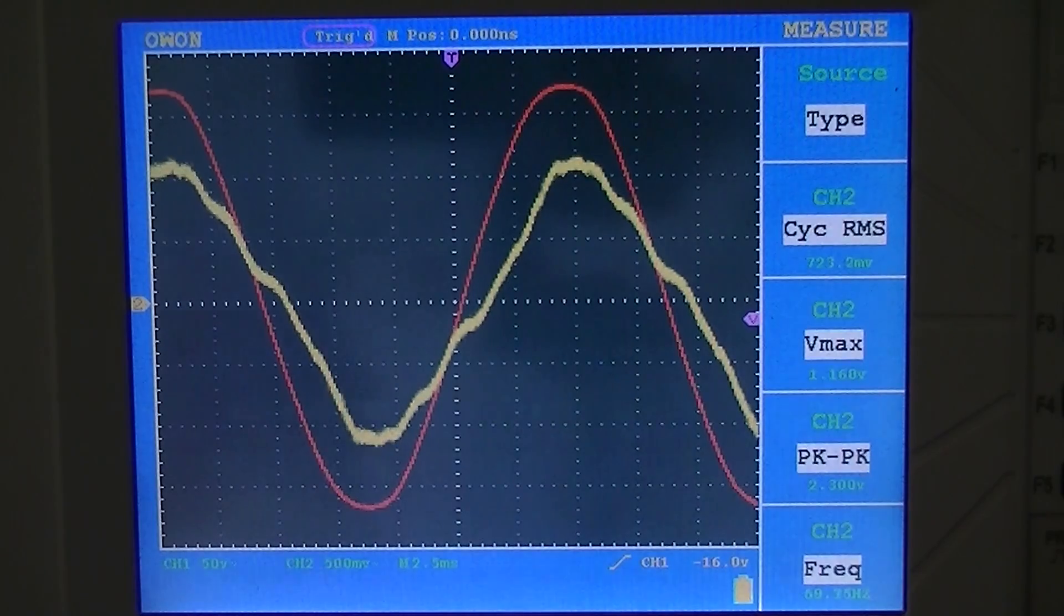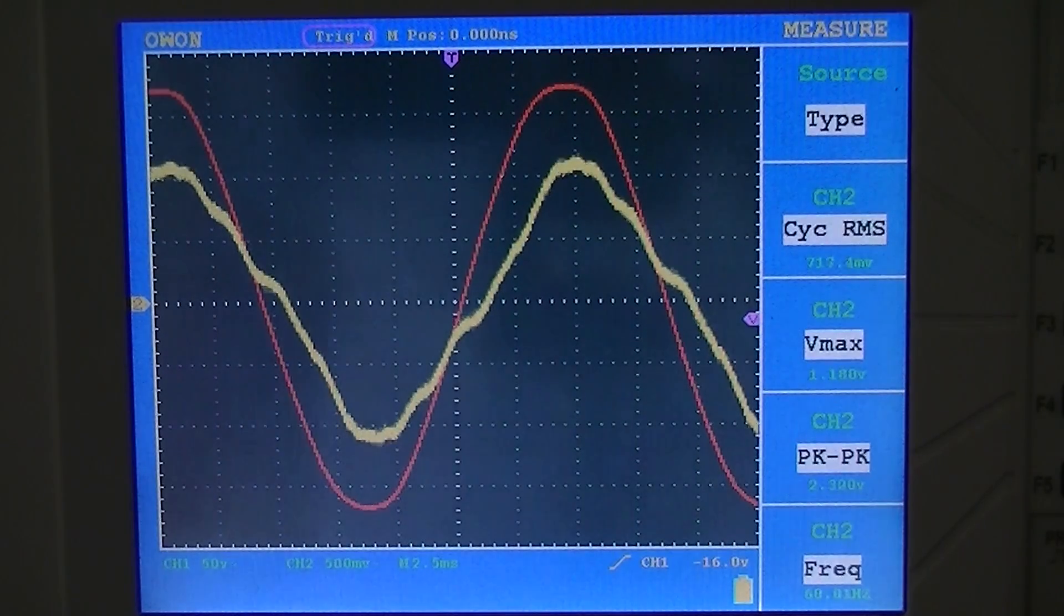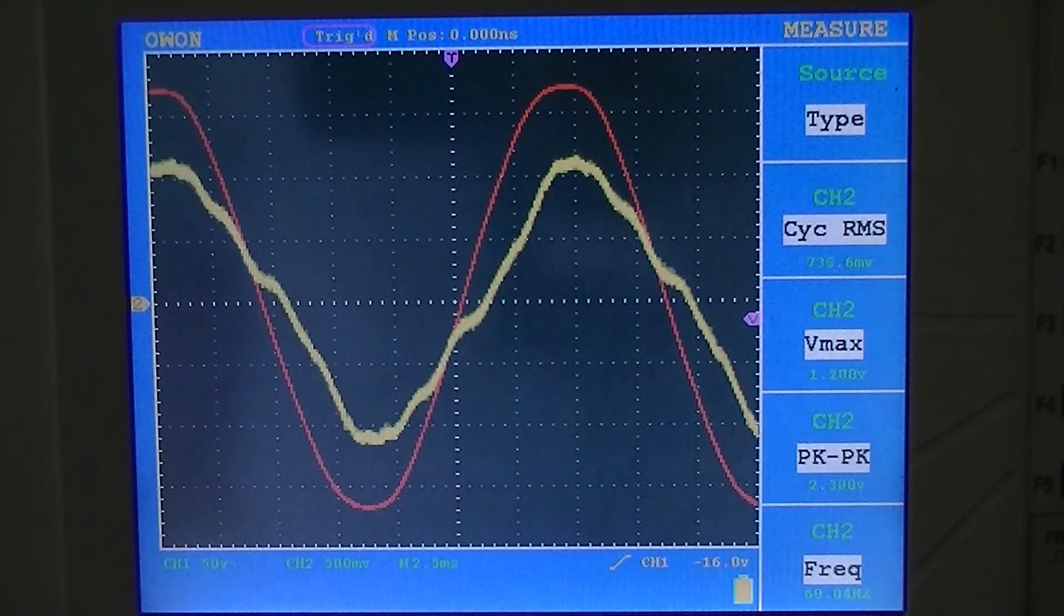And what you're looking at in red is the 120 volt AC waveform. And in yellow, we have the grounding system waveform as referenced to a non-electrified ground rod in my back garden. And we have a 470 ohm resistor in the circuit between the electrical ground and the non-electrified ground rod.